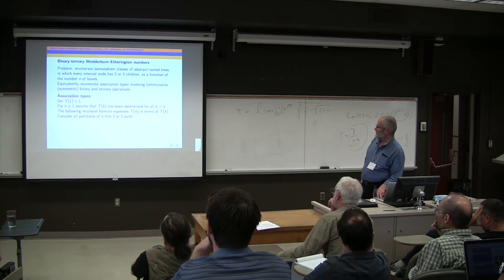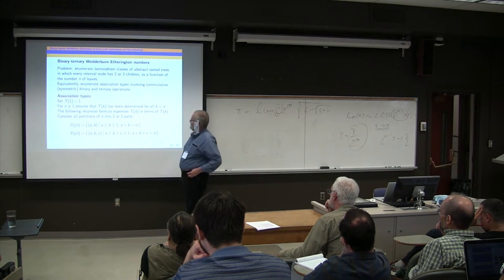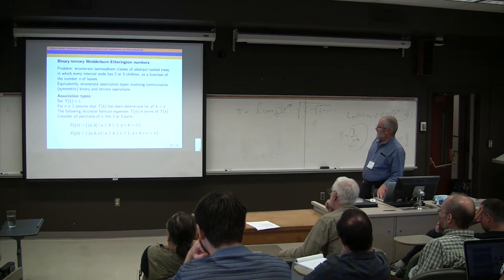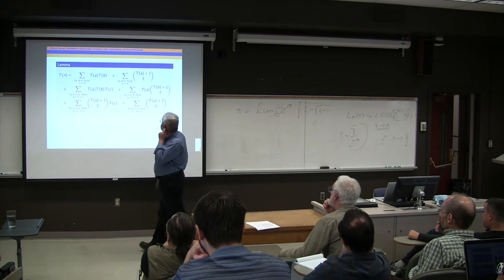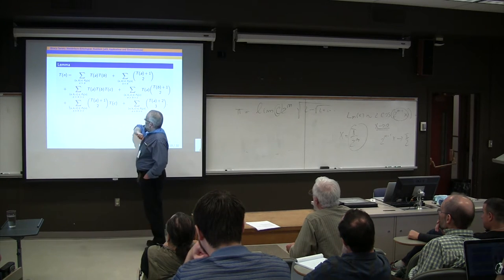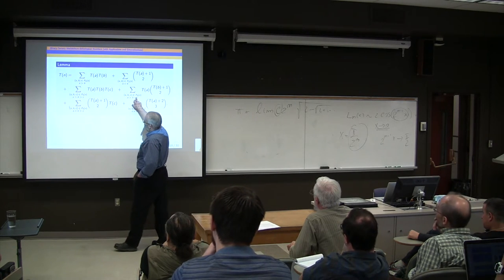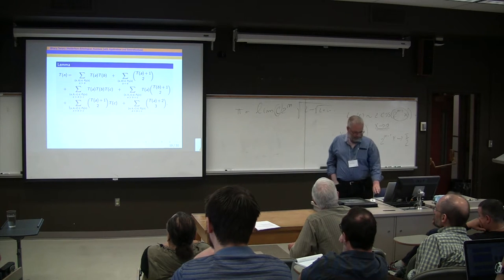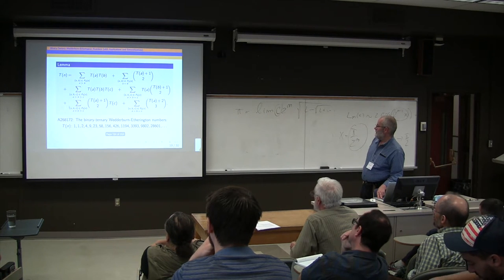So how do we enumerate the association types? Well, we have to consider all partitions of n into two or three parts. So decreasing partitions. Start off with t of one equals one. Assume that all the values are known up to n, less than n. And then we get a summation formula which looks intimidating, but it's actually rather trivial. It's basically the Wedderburn-Etherington binary recursion formula plus some terms for the ternary operation. If the degrees and the factors are all different, if the second degree equals the third degree, the first degree equals the second degree, or all three degrees are equal, you need to modify it. That's an easy thing to program to get these numbers. And you get that sequence.